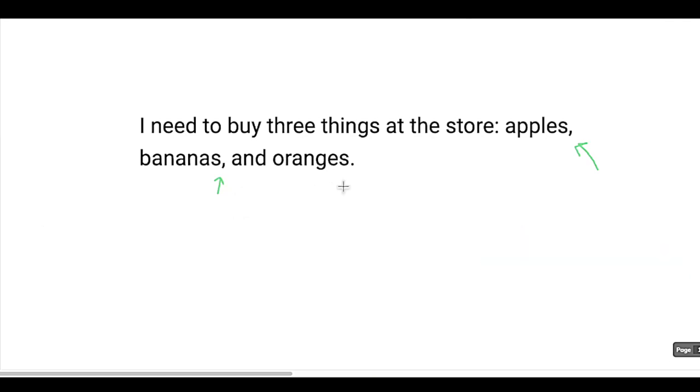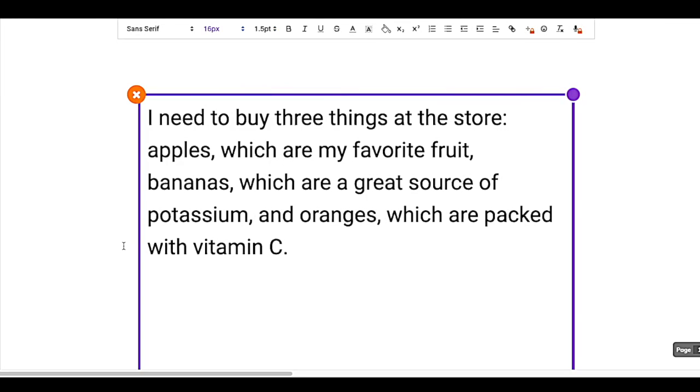But what if the sentence looked like this? I need to buy three things at the store. Apples, which are my favorite fruit, bananas, which are a great source of potassium, and oranges, which are packed with vitamin C. So here, we're using commas because that's the rule, right? And this is acceptable, but I think you would agree that it looks kind of wild because we have so many commas, it's hard to keep track of what's going on.